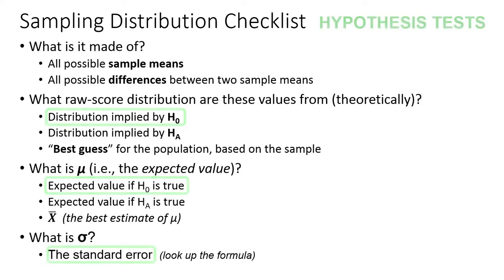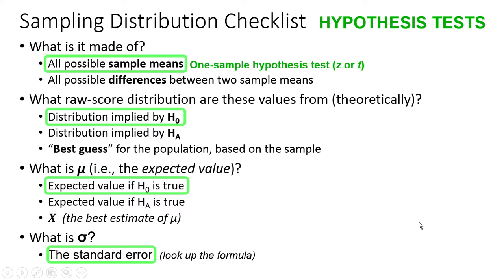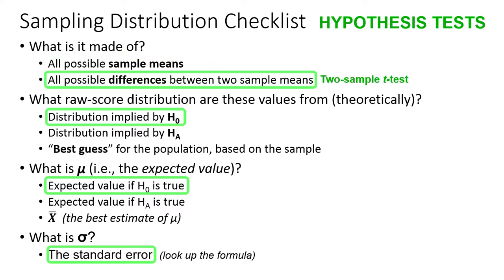For hypothesis tests, you always have the distribution implied by the null hypothesis, and the mean is the expected value if the null hypothesis is true. The standard error you just calculate from the formula. For a one-sample hypothesis test, you have all possible sample means. For a two-sample hypothesis test, you have all possible differences between two sample means.